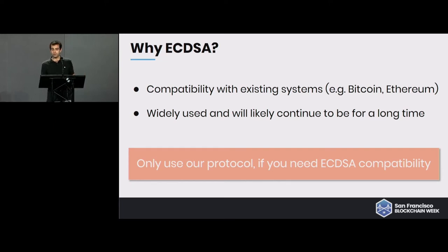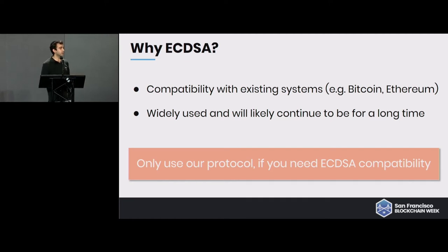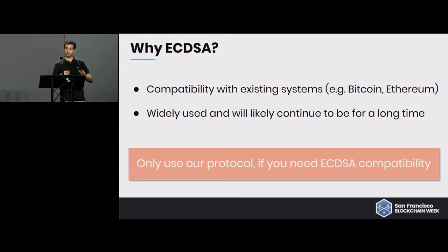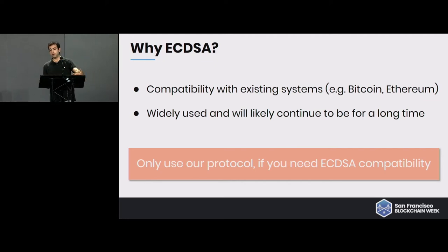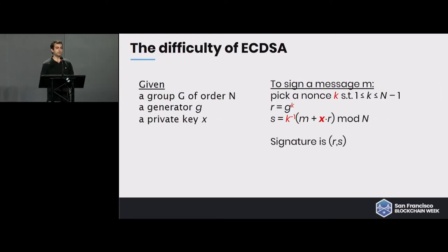Two large takeaways from the talk: one is that threshold signatures are very very useful and may be very useful in the protocols you're building. The second takeaway is if you're using ECDSA or need to be compatible with Bitcoin or Ethereum, we now have a very efficient scheme for doing that. But if you don't need ECDSA, there may be even more efficient schemes — and there are. So let's take a look at ECDSA and understand what the technical problem is.